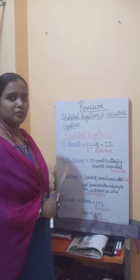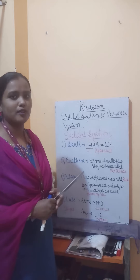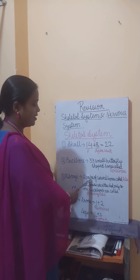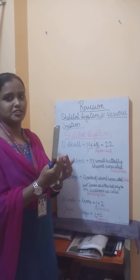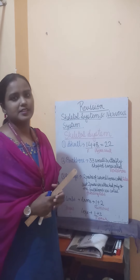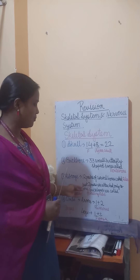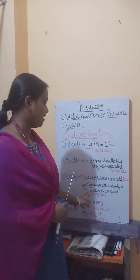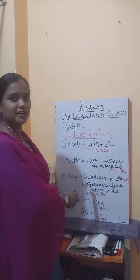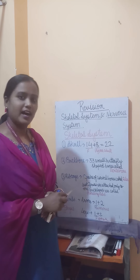The ribcage looks just like a cage and it protects the heart and lungs. The ribcage is made up of 12 pairs of curved bones called ribs. At the back, these ribs are attached to the backbone, whereas in the front they are attached to the breastbone. The last two pairs are only attached to the backbone and not to the breastbone — these are called floating ribs.